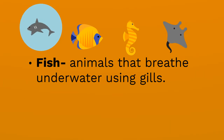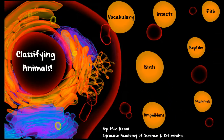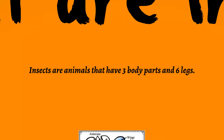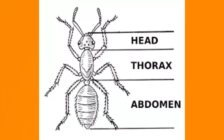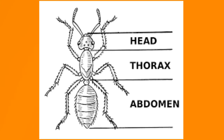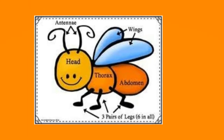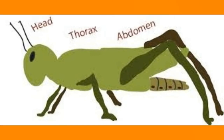Insects are animals that have three body parts and six legs. The first body part is the head at the top — it allows them to see and has antennas attached to it. The second body part is the thorax, which has all six legs attached to it. The last part is the abdomen, the very bottom part of the insect. Sometimes insects have wings, which are attached to the top of the thorax, just like the legs.